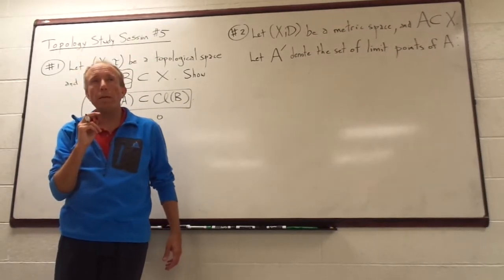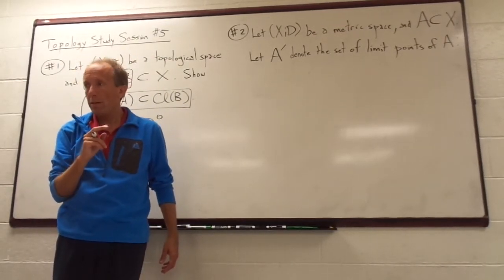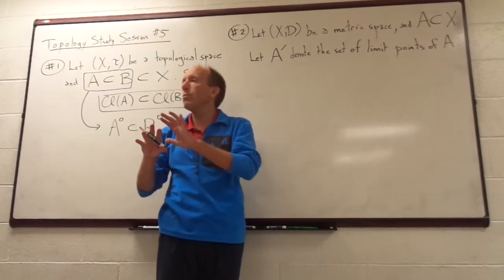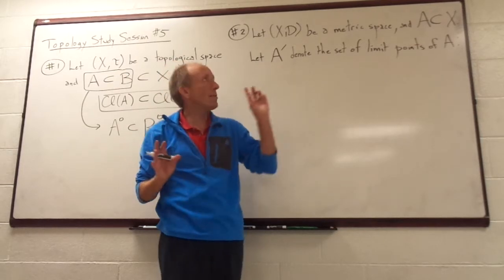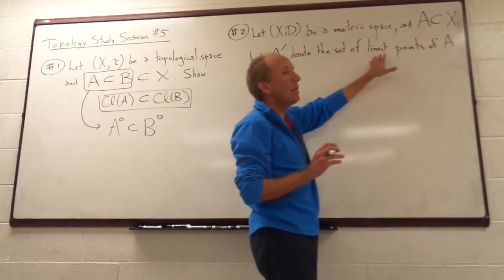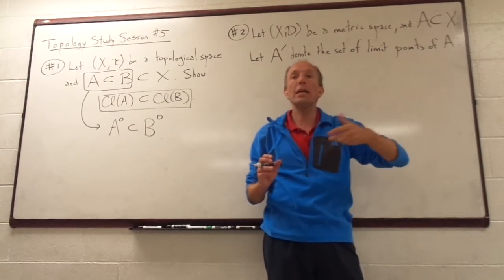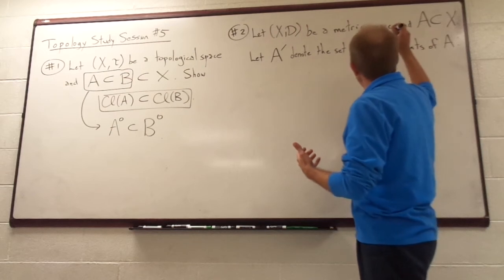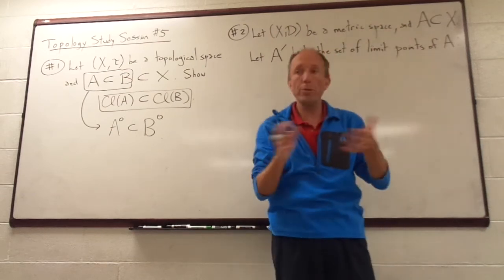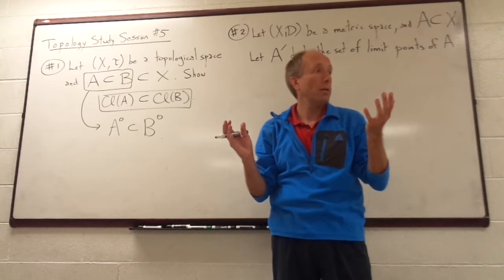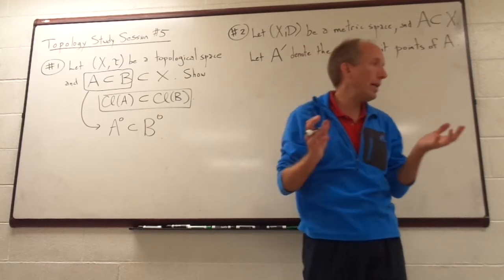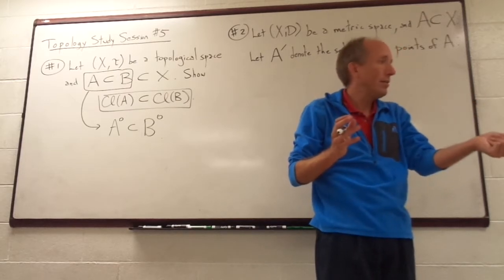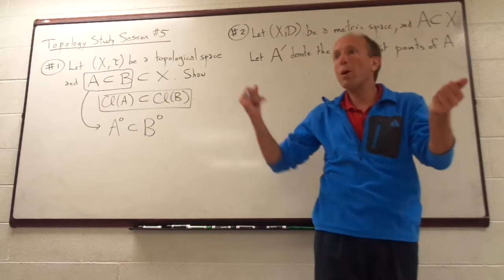Does everybody remember what that means? It's not quite the boundary — it's not the same thing as the frontier. What we're talking about is a limit point in the sense of a sequence. So A prime is the limit points of all possible sequences of points within A. You just take any sequence in A that converges, and the limit of that sequence is part of A prime.